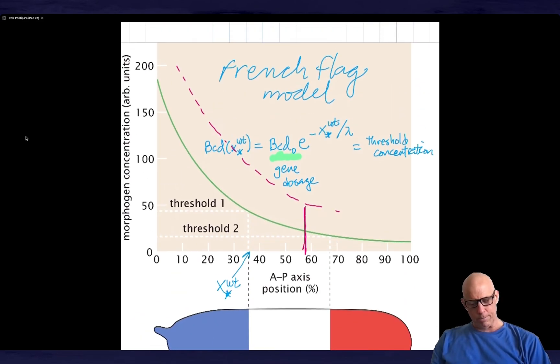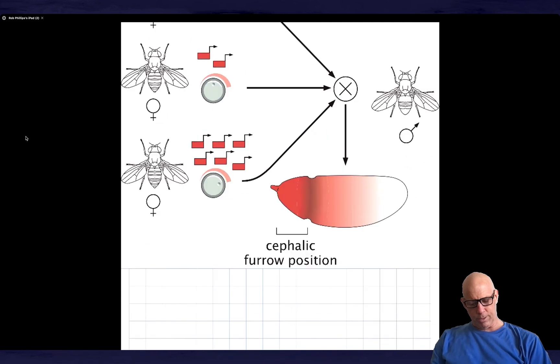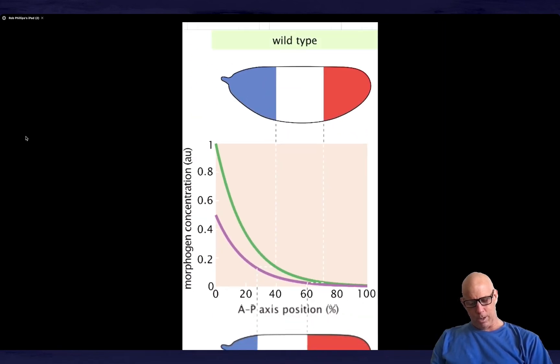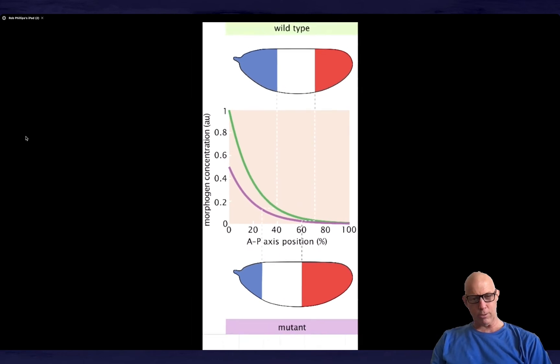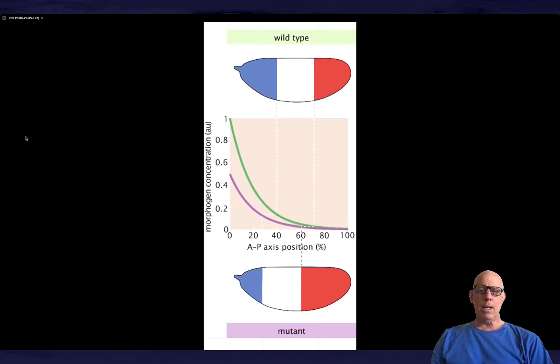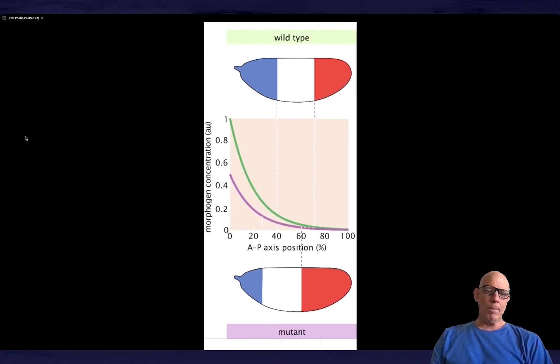That's what we've just done. So we've gone through this model. Effectively, what we've thought about was this picture. So I should have shown you this, actually, rather than just making my own little drawing. But you can see that there's a wild type and then there's a mutant. In this case, the mutant has a lower gene dosage.